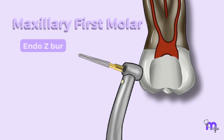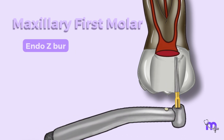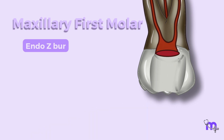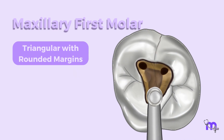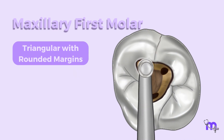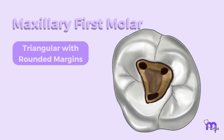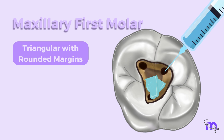Using an endo-Z burr, I de-roofed and refined the walls by diverging them to create a positive seat for the temporary filling, with copious irrigation. Making the access cavity triangular with rounded margins helped me gain direct access to the orifices, after which I irrigated the cavity with sodium hypochlorite and saline to remove the debris.